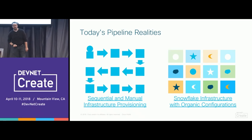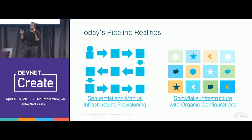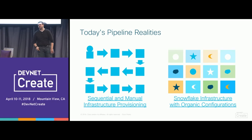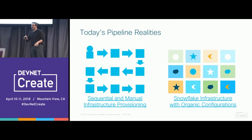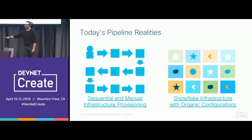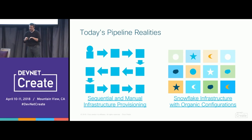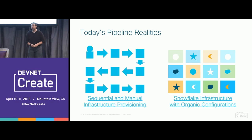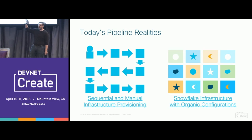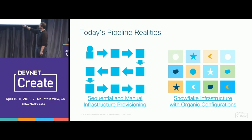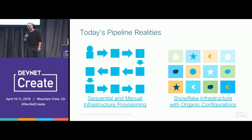Network configuration pipelines today are sequential and manual. When a change window rolls up, we carve up 40 switches among Bob, Billy, and Jane. They grab their paper, start hammering away at the keyboard — copy paste, copy paste — they get through their switches, do a 'copy run start,' and it's high fives all around. Then they realize Bob forgot half of his switches and they have to file an emergency change window for the next day. This is how configuration pipelines happen today.